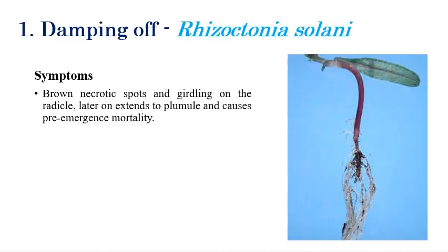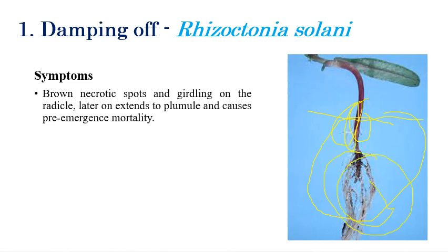Now we will look at each disease in detail. The first one is damping off, caused by Rhizoctonia solani. In other crops, damping off is often caused by Pythium species, but here in marigold it is caused by Rhizoctonia solani. The symptoms appear mainly in the root region — brown necrotic spots and girdling of the radicle and plumule, causing pre-emergence damping off and pre-emergence mortality.